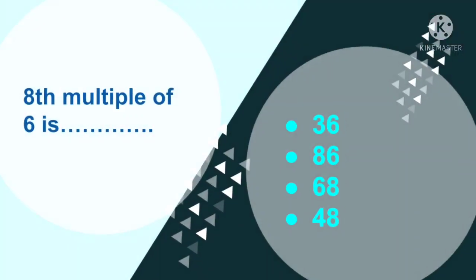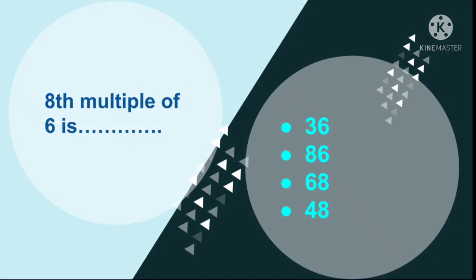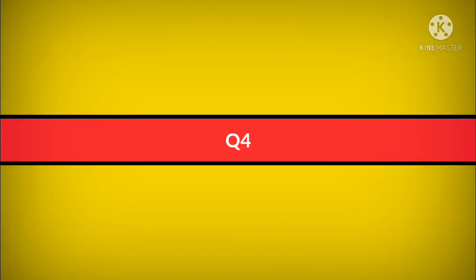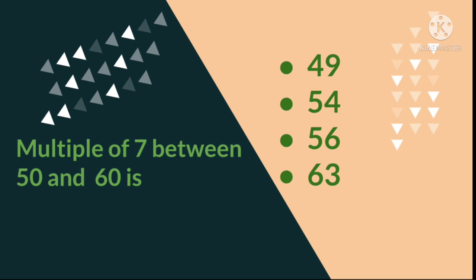Question number 3: 8th multiple of 6 is 36, 86, 68, or 48. Question number 4: Multiple of 7 which lies between 50 and 60 is, and your options are 49, 54, 56, or 63. So you have to find out the multiple of 7 which lies between 50 and 60.